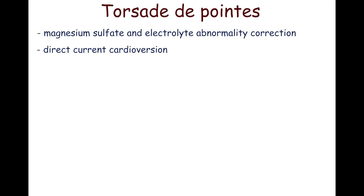Direct current cardioversion is used in refractory cases and with hemodynamic compromise. Direct current defibrillation is indicated when ventricular tachycardia degenerates to ventricular fibrillation.